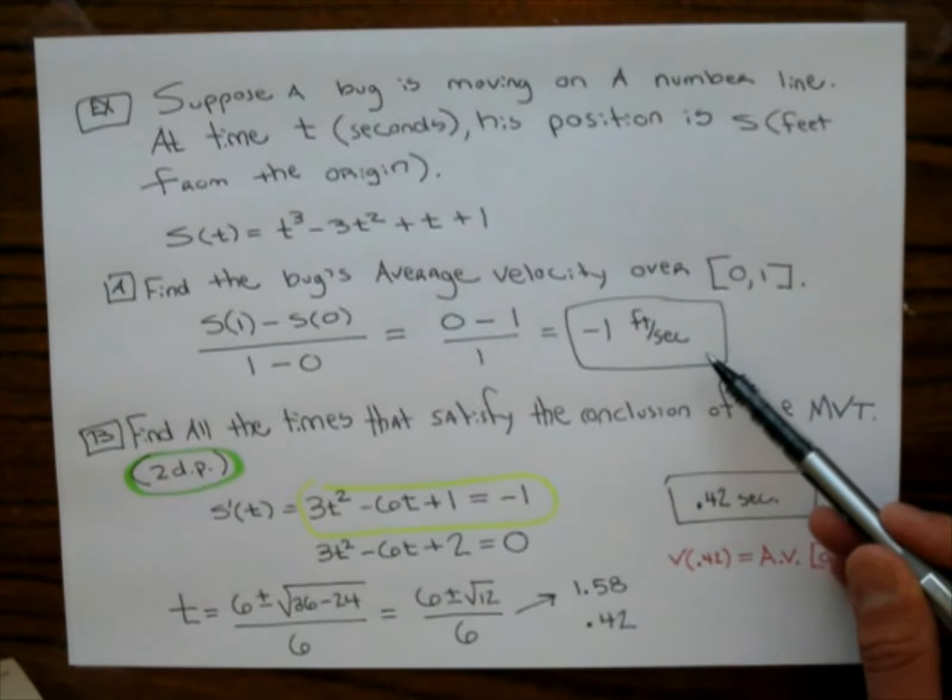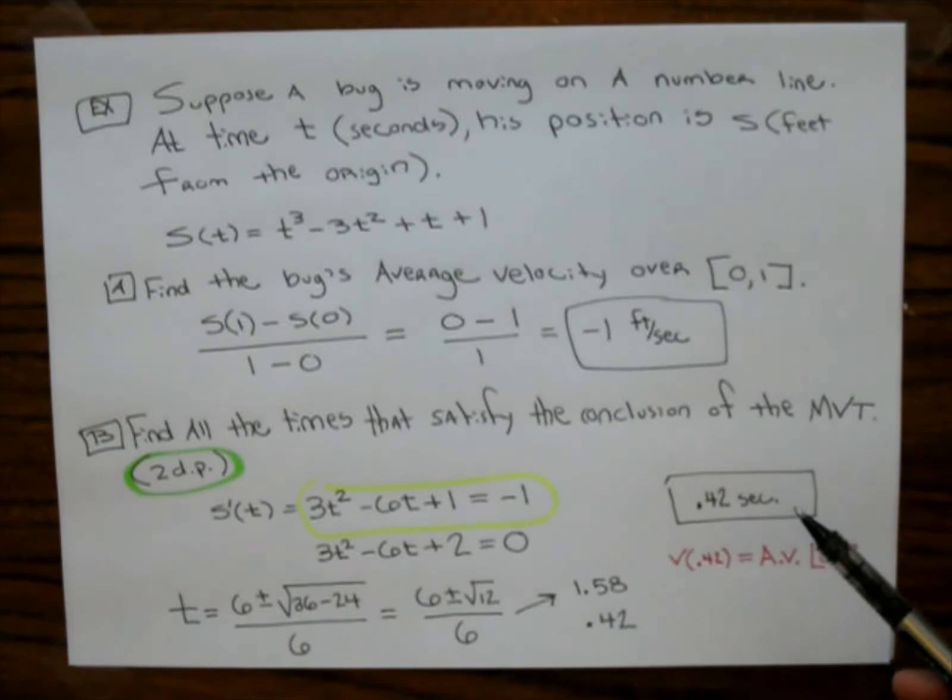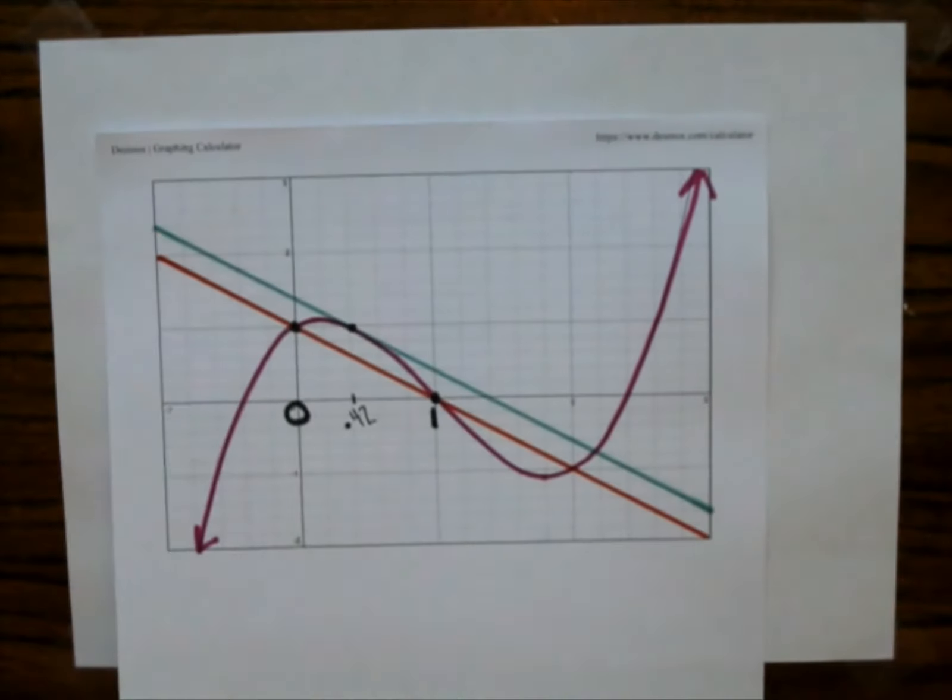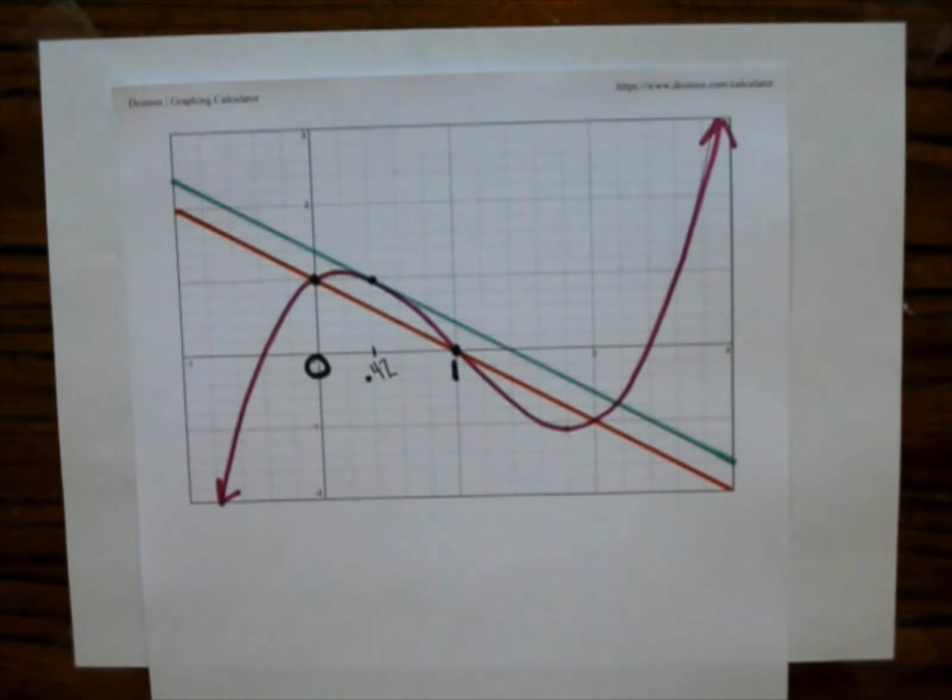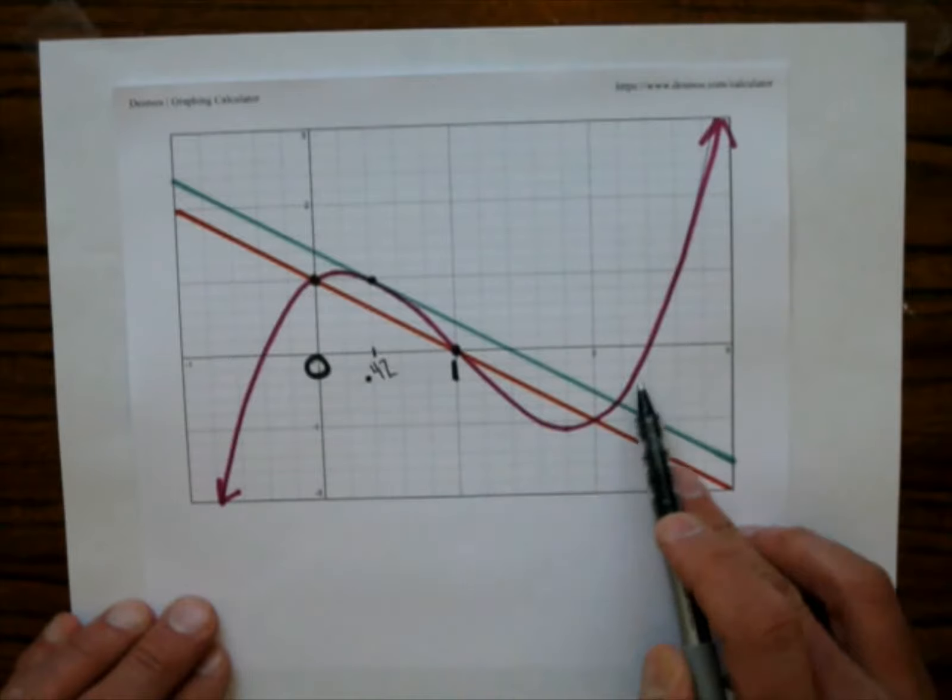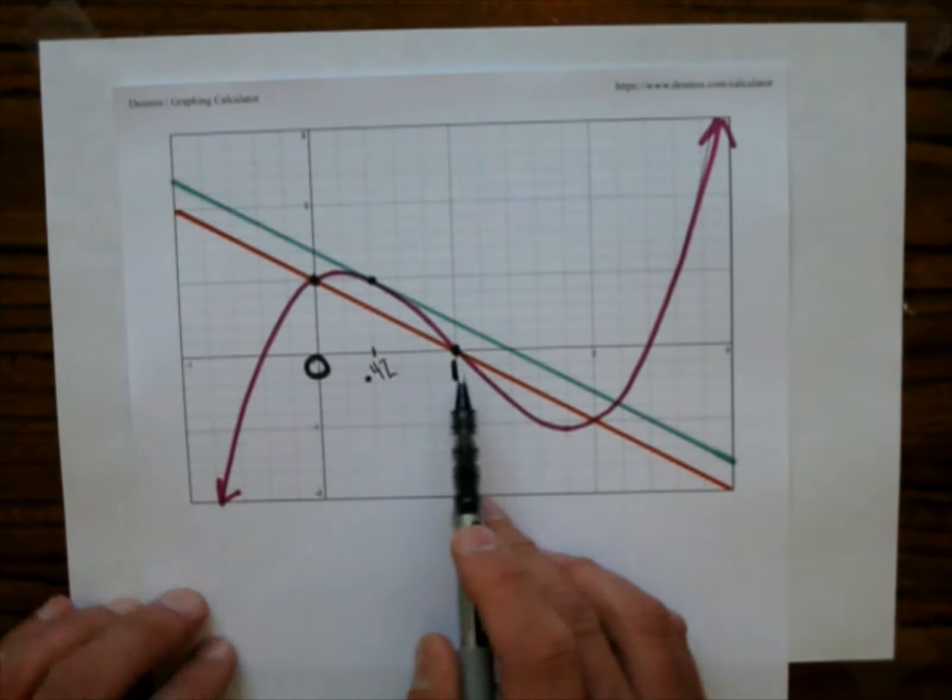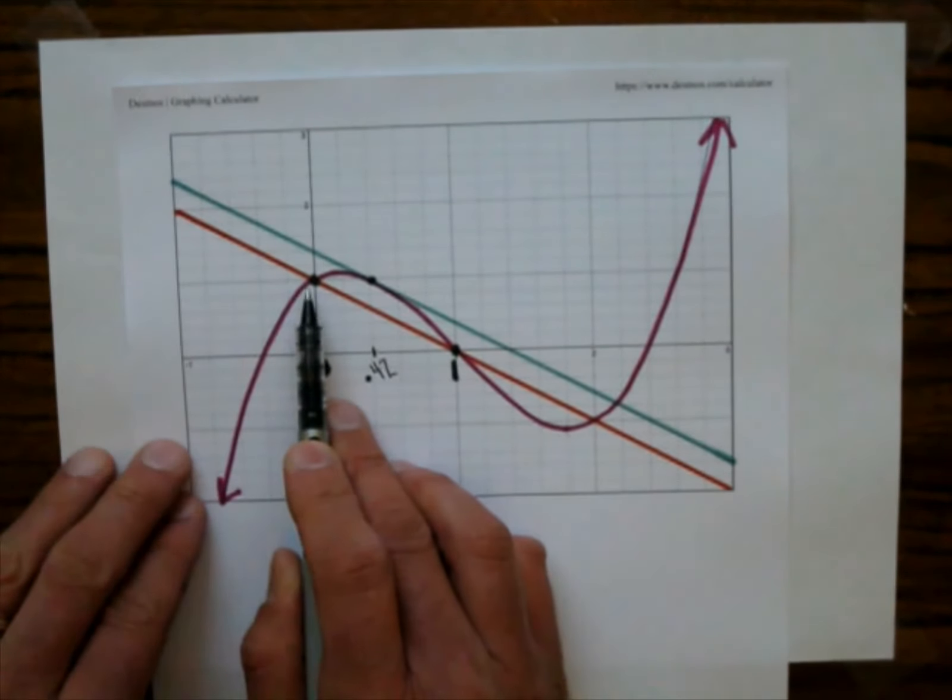I'm going to graph the representation for average velocity, which is a secant line. And then I'm going to graph the representation for this number right here, I'm going to graph the tangent line at this point. So let's go ahead and see that. So there is the function t cubed minus 3t squared plus t plus 1. That is this purplish function. The average velocity. Now, notice the scaling is different. So there's, that's 1 on the x-axis. And then 1 on the y-axis is right there.